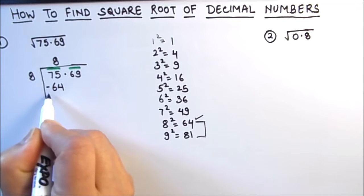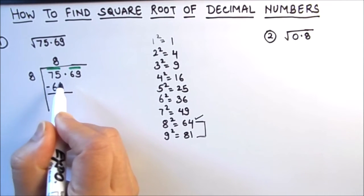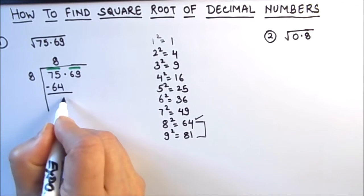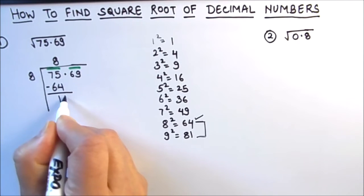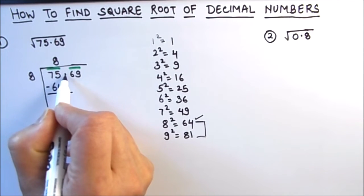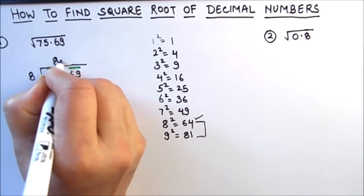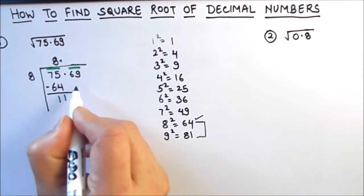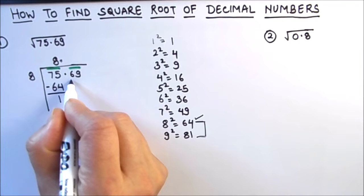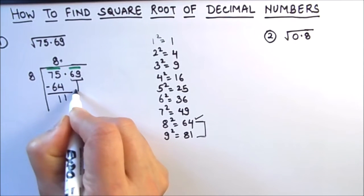We subtract 64 from 75: 75 minus 64 gives us 11. Next, we have a decimal point, so we place the decimal point in our quotient as well.